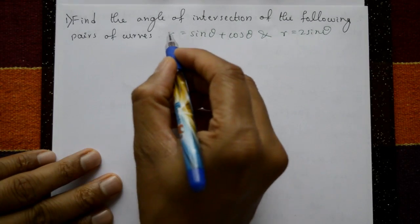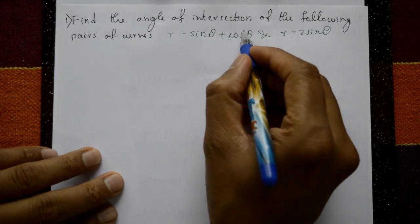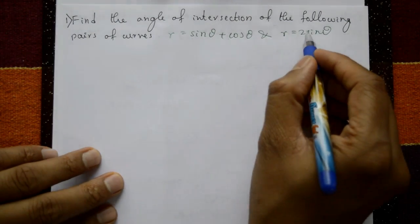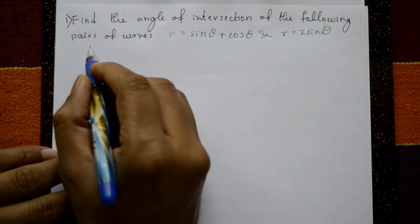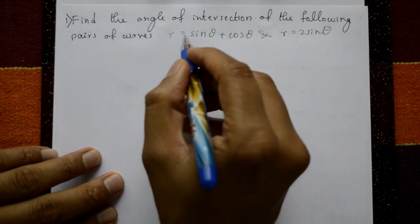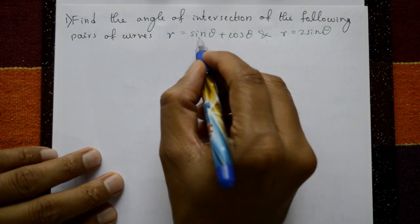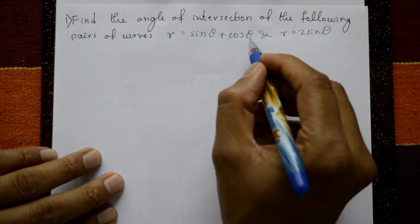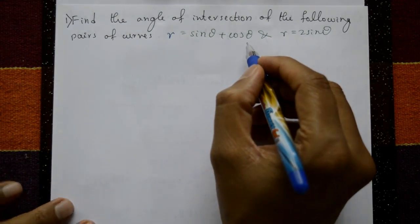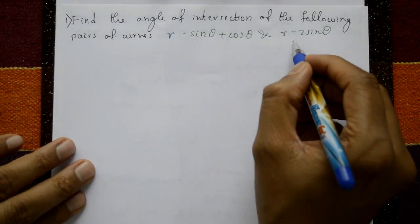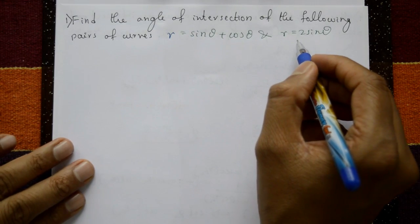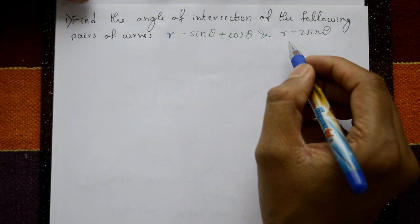Find the angle of intersection of the following pairs of curves: first curve r is equal to sinθ + cosθ, second curve r is equal to 2sinθ.